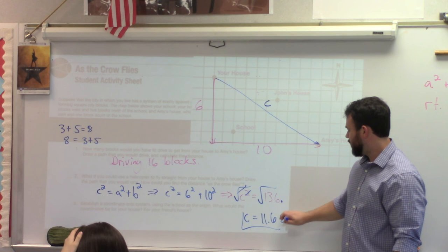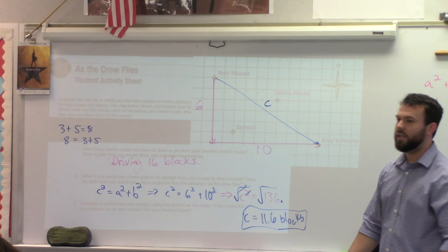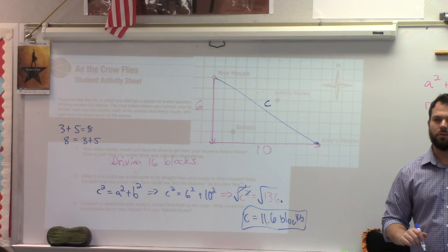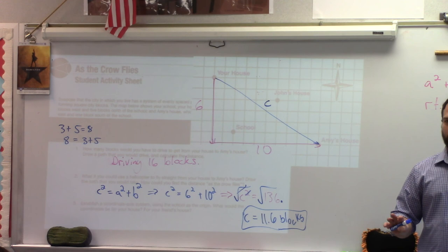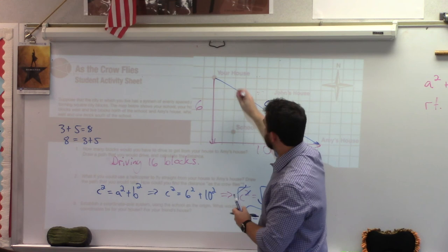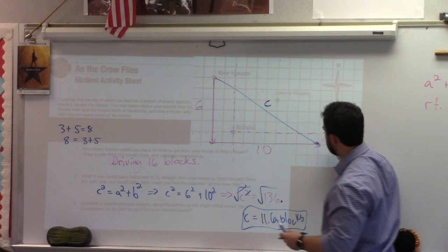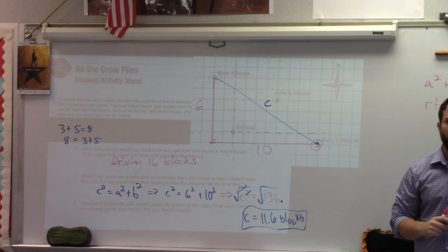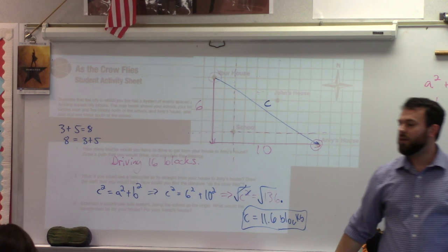We did not start on number 3 yesterday as a whole class. So let's look at that one together before I have you start working again. School right here — that is the origin. There's my y-axis, there's my x-axis. What are the coordinates for this point and for this point? Does that make sense? Ready to get to work within your groups? Go ahead and get to work — try to identify those coordinates. If you get done with number 3, move on to number 4, which is on the back side.